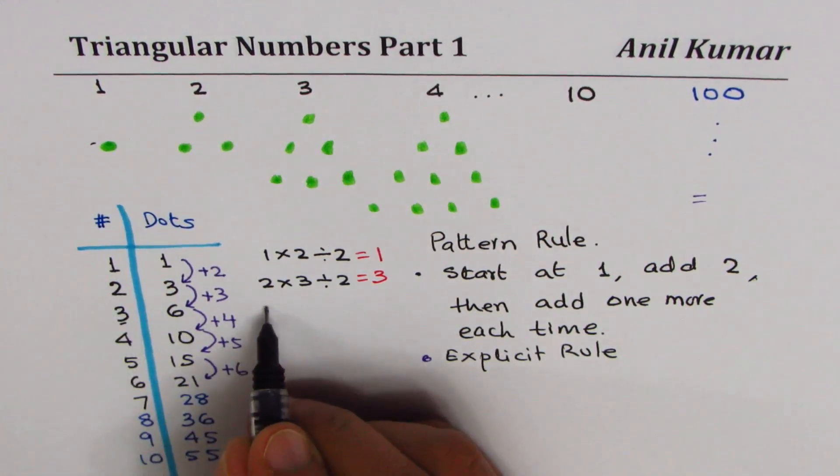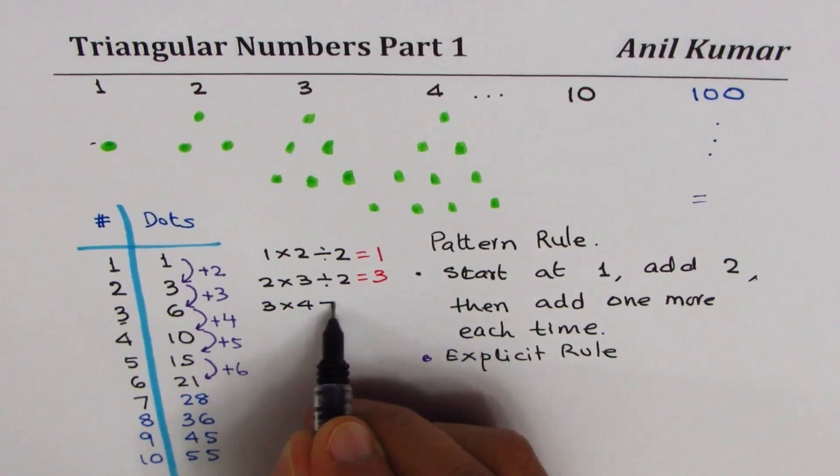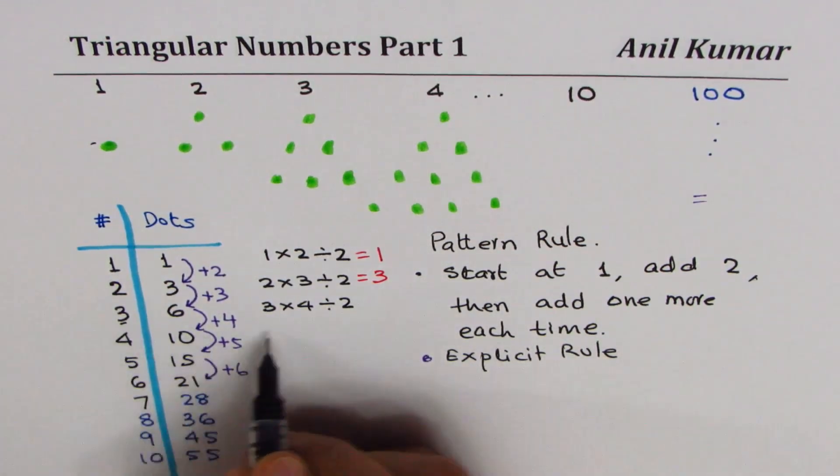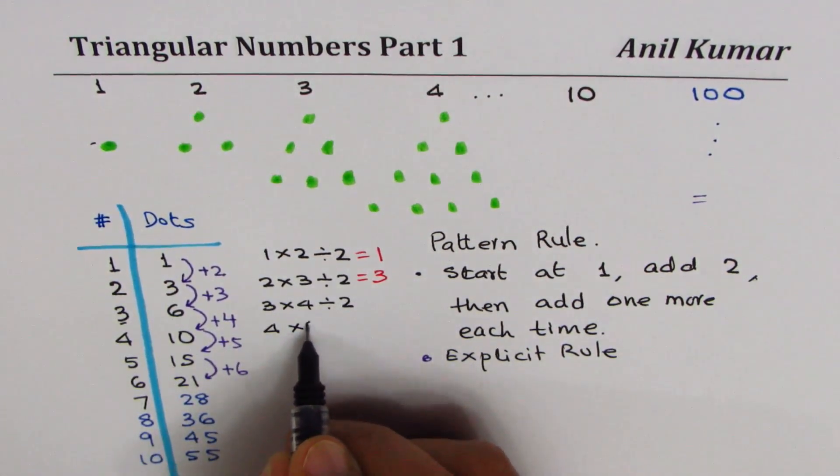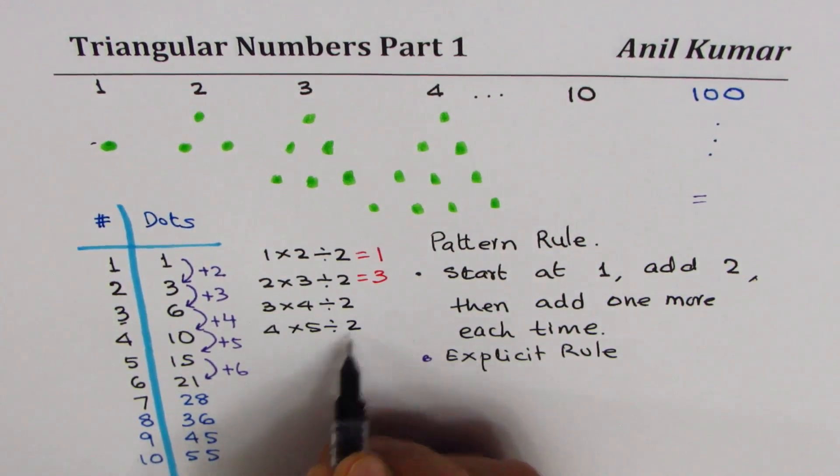for three, I'll write three times four, divide by two. For four, I'll write four times five, divide by two. Similarly, I can continue.